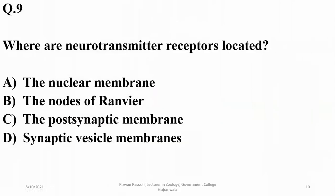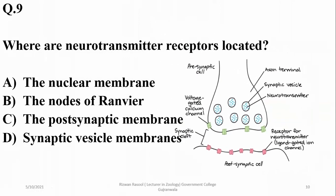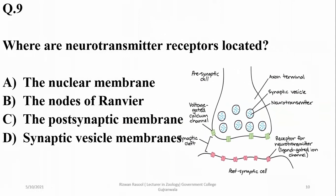Where are neurotransmitter receptors located? Neurotransmitter receptors are located on the post-synaptic membrane, so the right option is charlie.